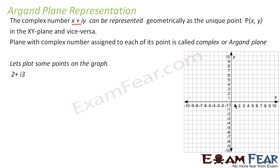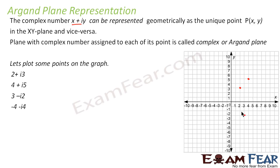Let's plot some points. For 2 plus i3: x is 2, y is 3. For 4 plus i5: we take 4 in x and 5 in y. For 3 minus 2i: we take 3 in x and minus 2 in y. For minus 4 minus 4i: we take minus 4 in x and minus 4 in y.